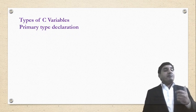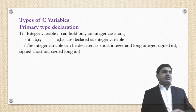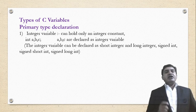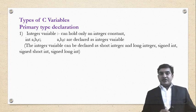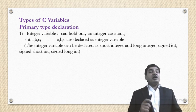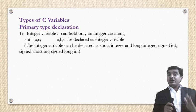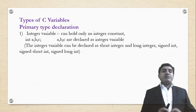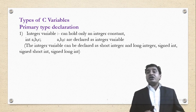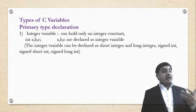Types of C variables — primary type declaration. Integer variable can hold only an integer constant. For example: int a, b, c — here 'int' is the data type and a, b, c are declared as integer variables. The integer variable can also be declared as short integer, long integer, signed integer, signed short integer, or signed long integer.